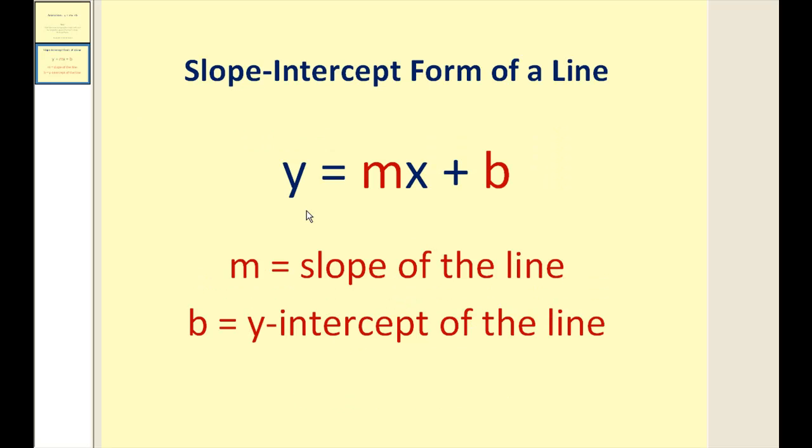And just to refresh your memory, if a line is in the form y equals mx plus b, m equals the slope of the line and b equals the y-intercept of the line.